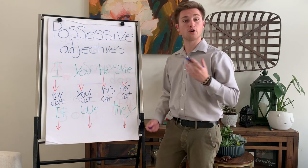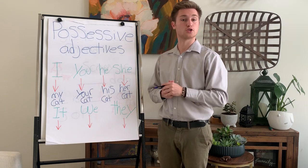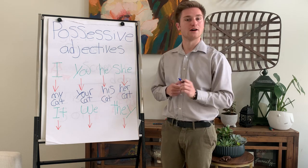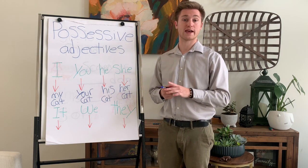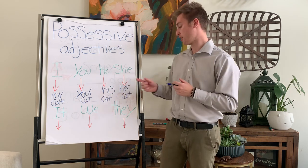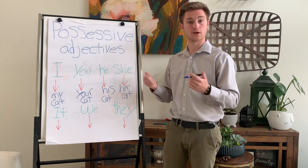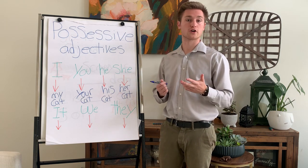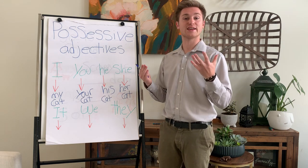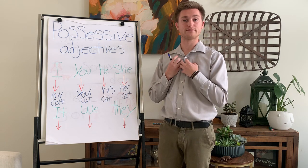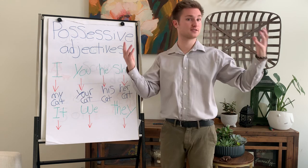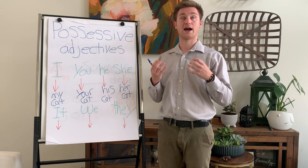You don't always need to talk about animals with possessive adjectives. For example, you could say a ball or a car — that is her car, or her shoe. It is things that we own. This is my house.